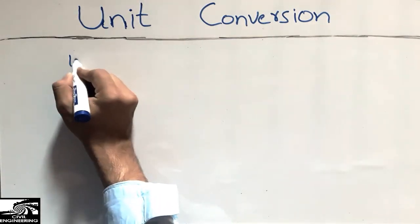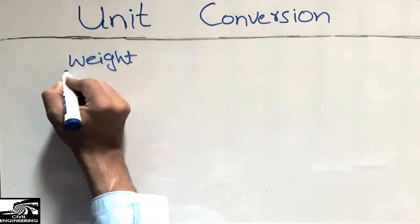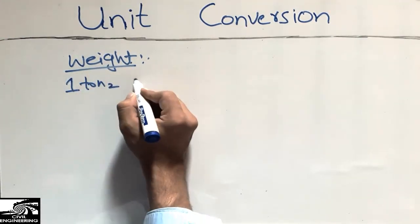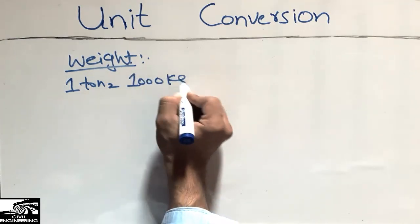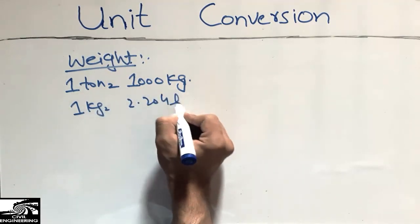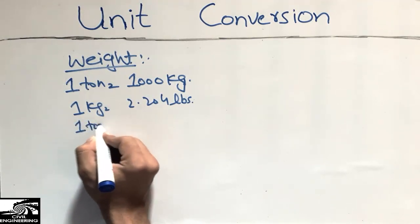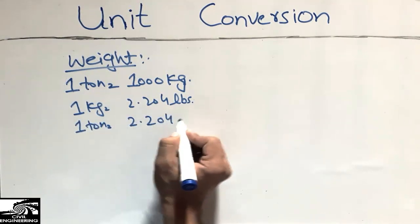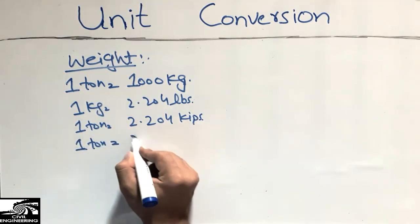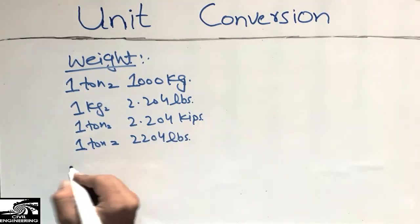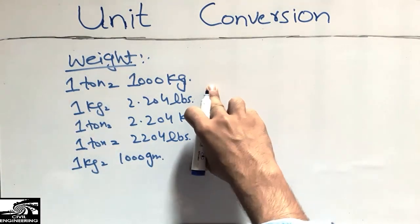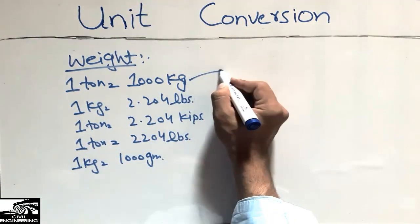Now I will do the weight conversion. Some basic conversions: one ton is 1000 kilograms, one kilogram is 2.204 pounds, one ton is 2.204 kips (kilo-pounds), and one kilogram is 1000 grams. If we know this table, we can convert any of these into one another.